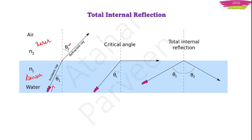In the next situation, the torch is tilted more. The light ray travels to the surface of the water and then gets refracted along the surface of the water — it does not go out into the air. Instead, it travels along the surface, making an angle of 90 degrees with the normal. This angle of incidence is known as the critical angle.